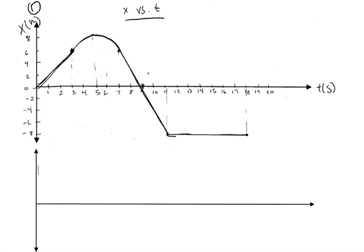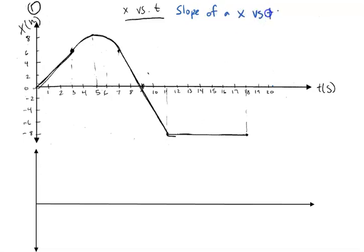Today we're going to talk about how to convert position-versus-time graphs to velocity-versus-time graphs. We know that speed and velocity is simply some distance interval per time interval. So if we look at a position-versus-time graph, in the first three seconds we've traveled six meters in three seconds. We can use the slope of this line — 6 divided by 3 — to calculate your speed. The slope of a position-versus-time graph is velocity.